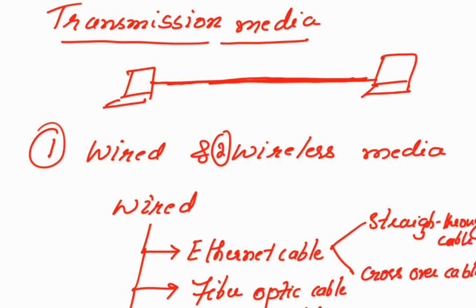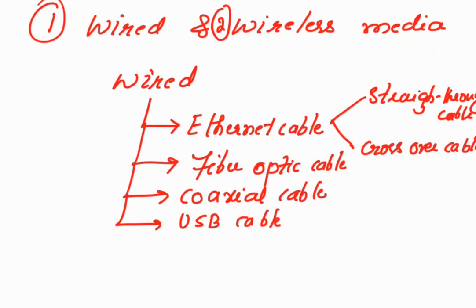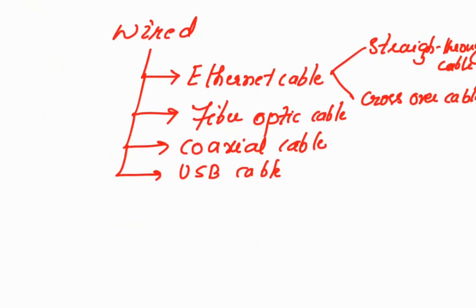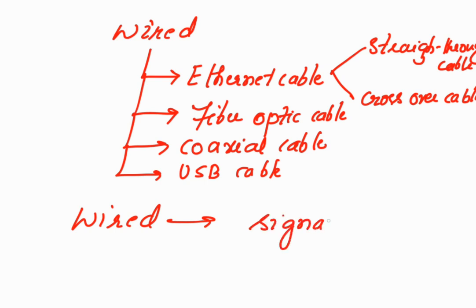Whatever I am giving here in the introduction, I am just listing out the different components of a computer network — in detail I shall be explaining in upcoming videos. In the wired medium, data is converted into signals, mainly electrical signals.